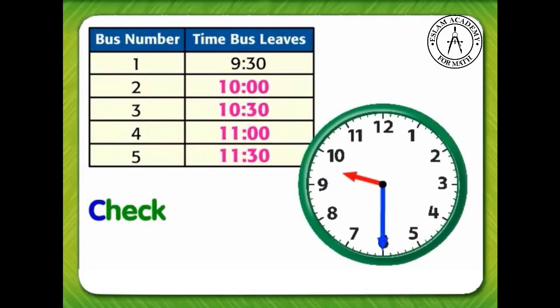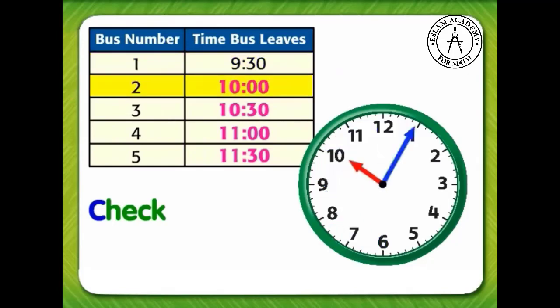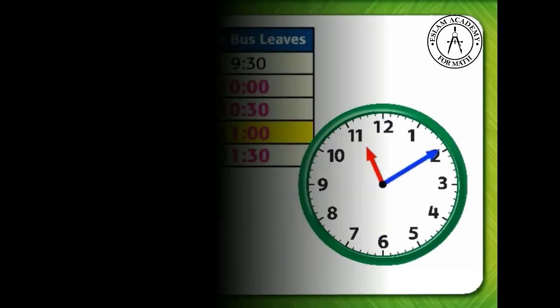Let's check our answer. Is our answer reasonable? Our answer is reasonable, because each bus left one half hour, or 30 minutes, later than the bus before it.